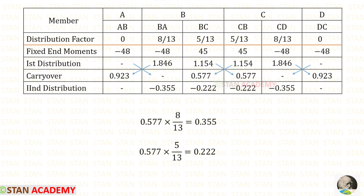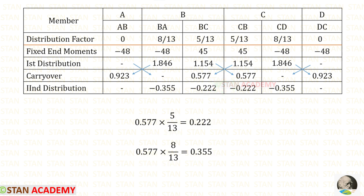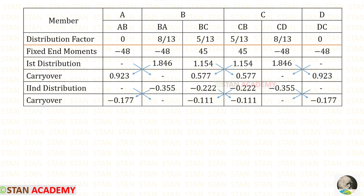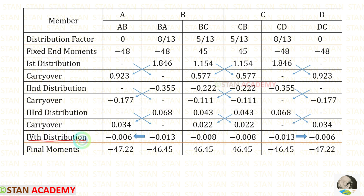For the second distribution at joint B, multiply by the distribution factors — the result is positive, so enter as negative. For joint C, multiply by distribution factors — the result is positive, so enter as negative. Carry over by dividing by 2. Continue redistributions and carry overs until the values are very small — I have done up to the fourth distribution, stopping because the values became very small.